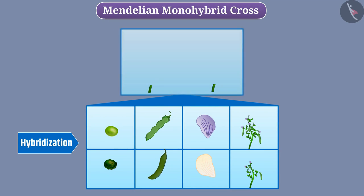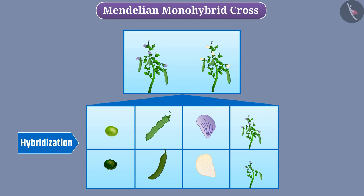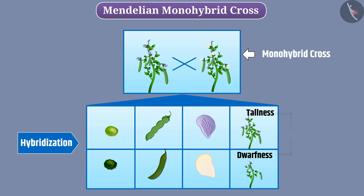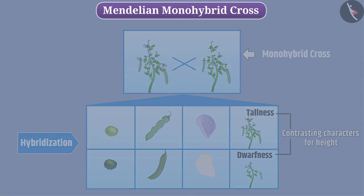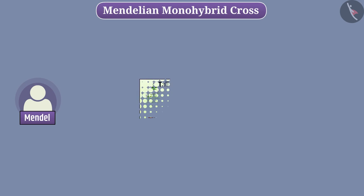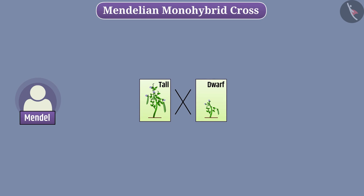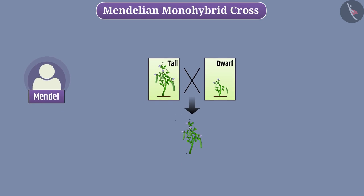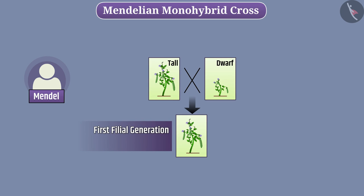Hybridization of two garden pea plants with a pair of contrasting characters is called Mono-Hybrid Cross. Tallness and dwarfness are contrasting characters for height. Mendel hybridized a tall plant with a dwarf plant and produced the first filial generation, i.e. F1 generation, from the seeds obtained. All the plants of this generation were tall.